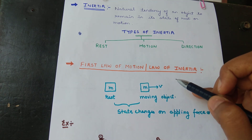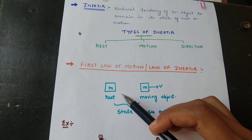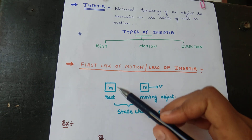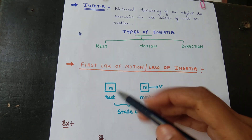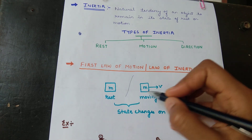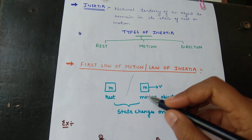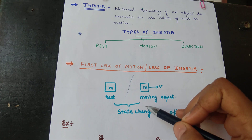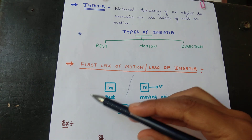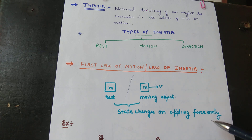Now we will discuss the First Law of Motion, also called the Law of Inertia. It is quite an easy law. According to this law, if an object is in a state of rest or in a state of motion, its state does not change until an external unbalanced force is applied on it. The state changes only on applying an external unbalanced force.